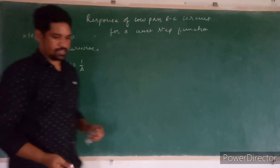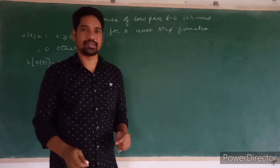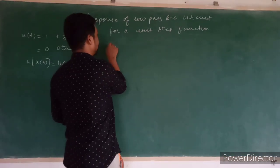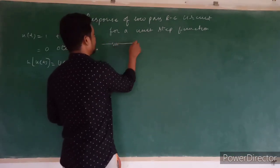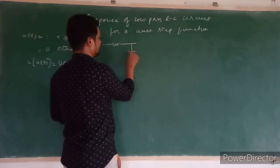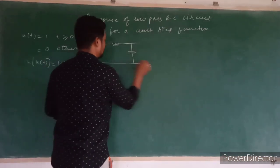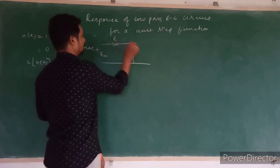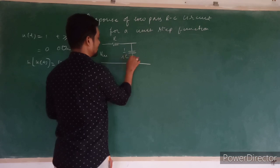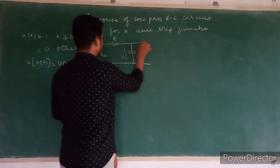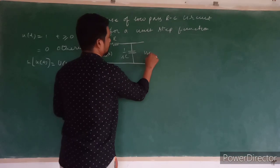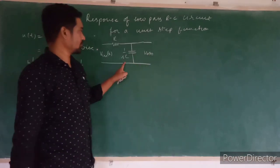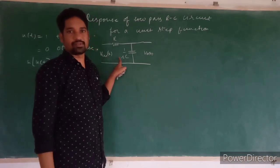Considering the Laplace equivalent circuit of a low pass RC circuit, it looks like this. We have resistance R here, and we have a capacitance represented as 1 upon sC in the Laplace domain. Input is given here, and V_out is V_naught(s). This is the representation of the low pass RC circuit in its Laplace equivalent circuit.